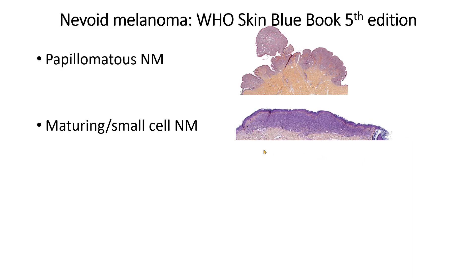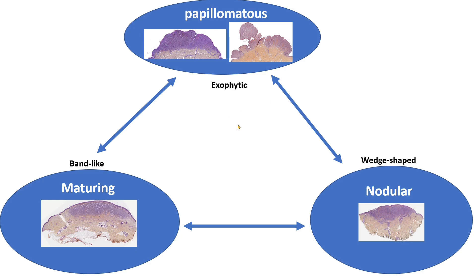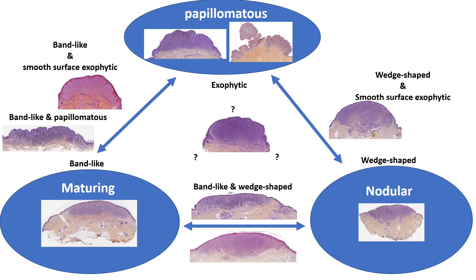The second type was the maturing type, which we refer to here as the flat elevated type, more frequently found on the limbs and in older people. In the current WHO classification, subtypes include the papillomatous architecture, the exophytic architecture, the band-like flat architecture called maturing or small cell nevoid melanoma, a more wedge-shaped silhouette called nodular nevoid melanoma, and a large nested nevoid melanoma.